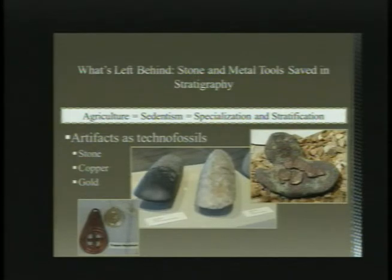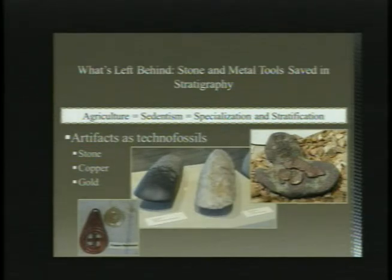Sedimentary layers containing the evidence of long-term human activity are known as anthrosols. The accumulation of a continuous layer of human deposits over long periods of time is possible because of sedentism brought on by agriculture. Intensive cultivation, irrigation, and fertilization leave behind disturbances in soil layers and varying levels of compounds such as phosphates, carbon, and ferromagnetium. It is in these cases that evidence can be found of humans altering or controlling the chemical compositions of depositional environments.